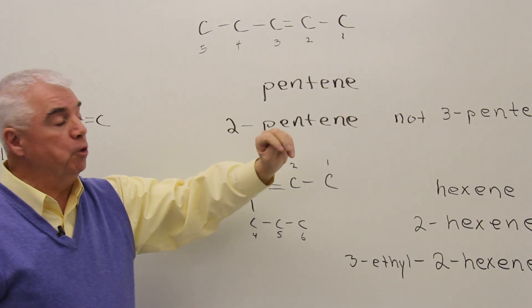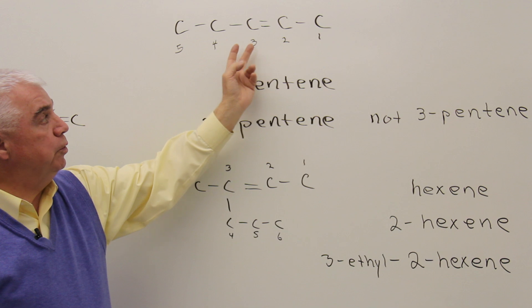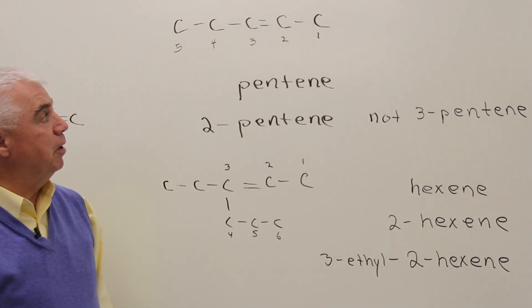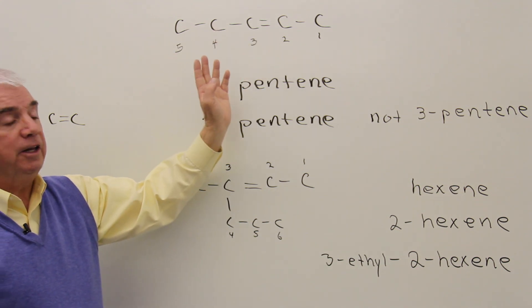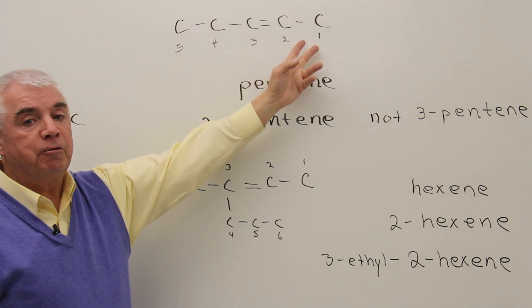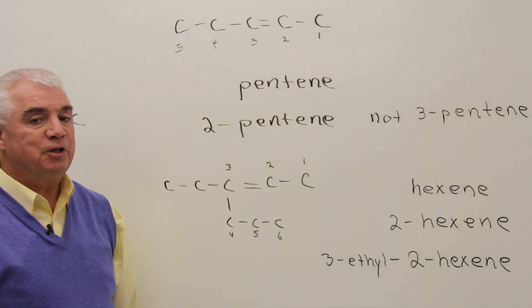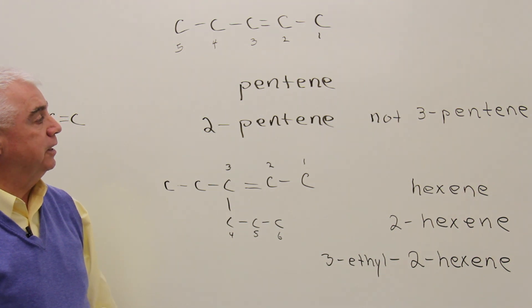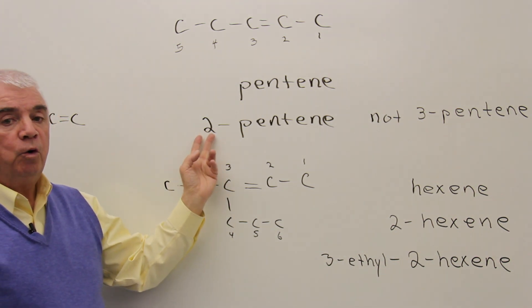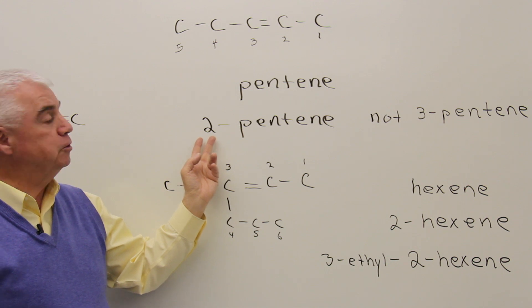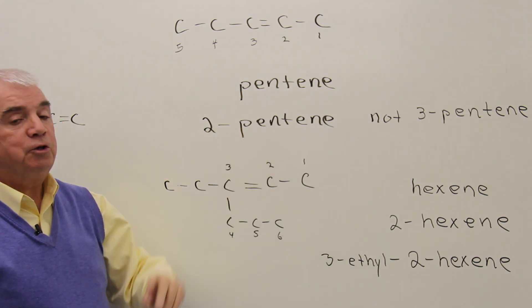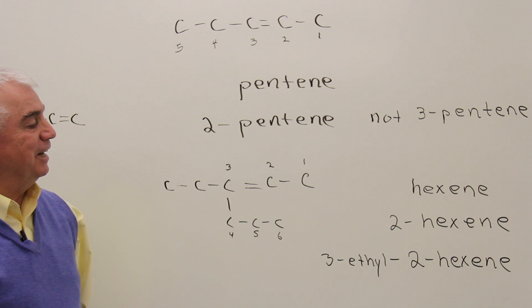But if I number from the right, one, two, the carbon-carbon double bond is between positions two and three. Or another way of saying that is that we want to number from the end that's closest to the carbon-carbon double bond. And we use only one number to indicate the position of the double bond, the first number. So this is 2-pentene, and not 3-pentene.